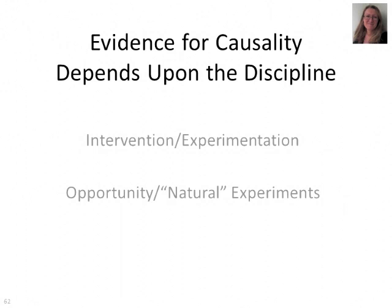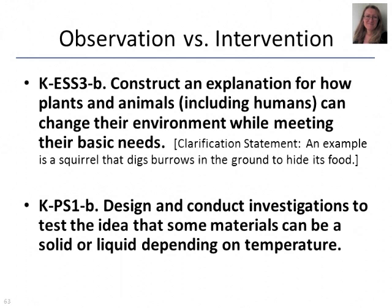In natural contexts, in the biosciences, we typically look for opportunistic or natural experiments, because we're not necessarily going to intervene to create a test to search for mechanism — to move from correlation to causation.